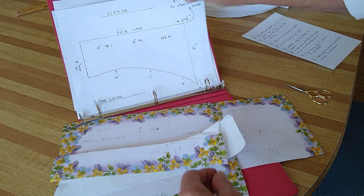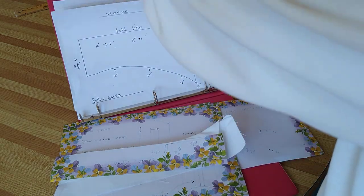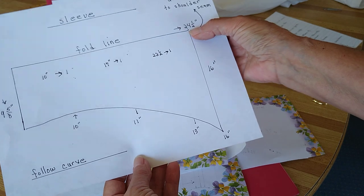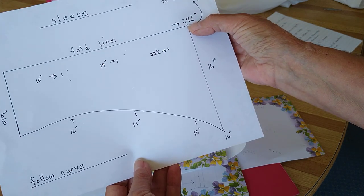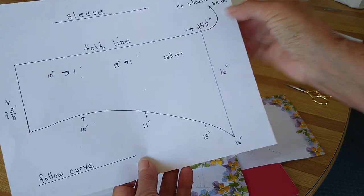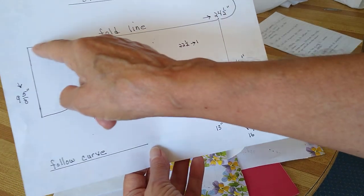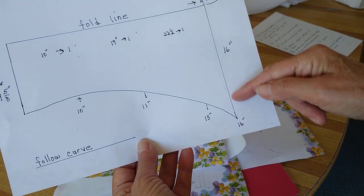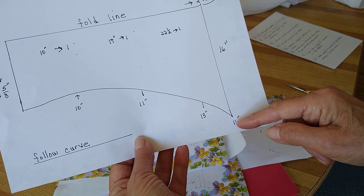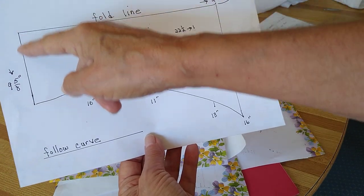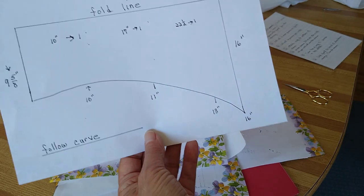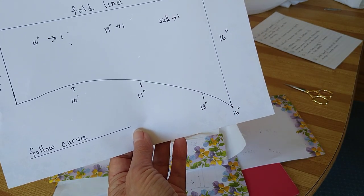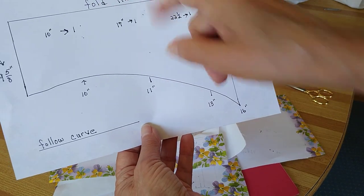Now for the sleeve, this is the main body of the sleeve. In the center of this sleeve will get attached to the shoulder. So it's going to be 24 and a half inches long, 16 inches in depth, 9 and 5 eighths over here by the sleeve, and you're going to mark this here as the fold line.